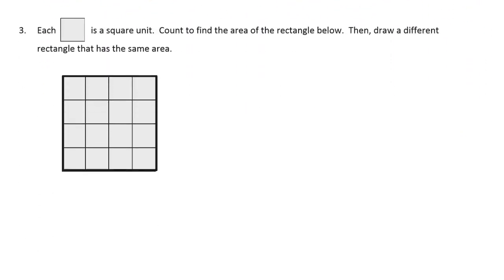Each square is a square unit. Count to find the area of the rectangle below, then draw a different rectangle that has the same area. This is 1, 2, 3, 4, and it's going to be four rows of 4.